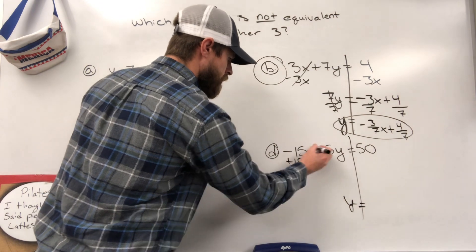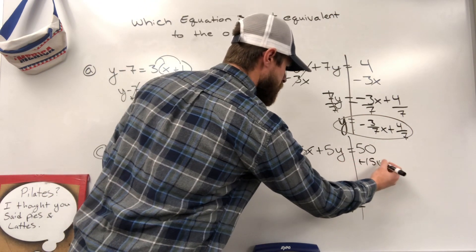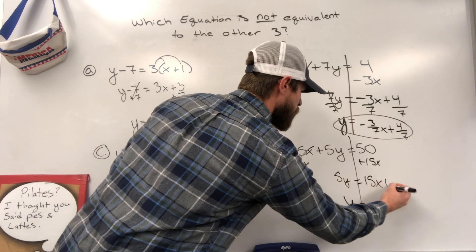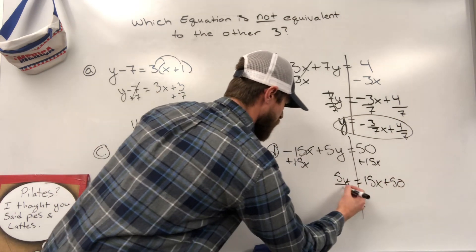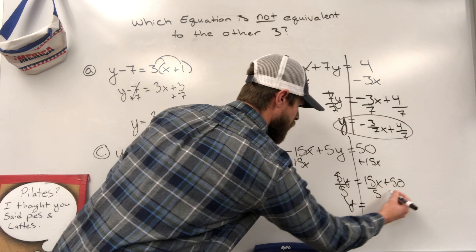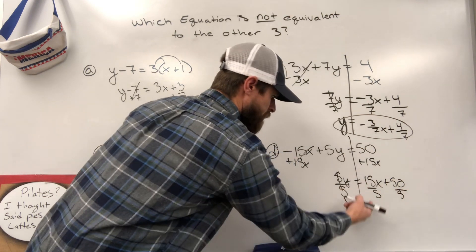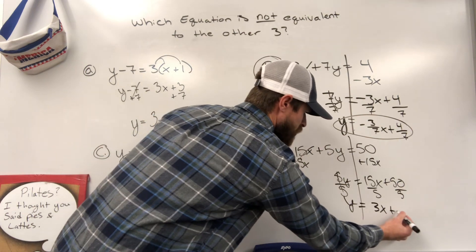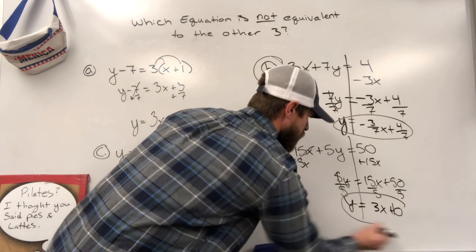Add 15x, add 15x, 5y equals 15x plus 50, divide by 5, divide by 5. 15 divided by 5 gives you that 3x. 50 divided by 5 gives you that 10 that we are looking for, and these all match.